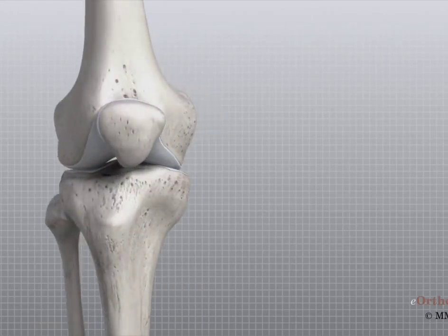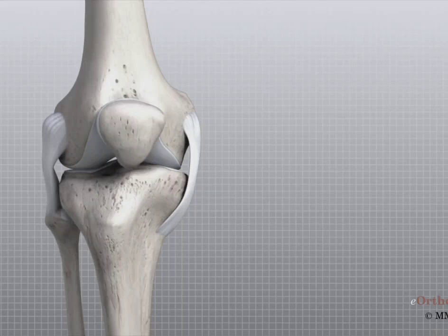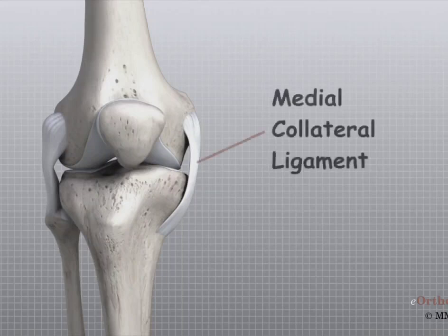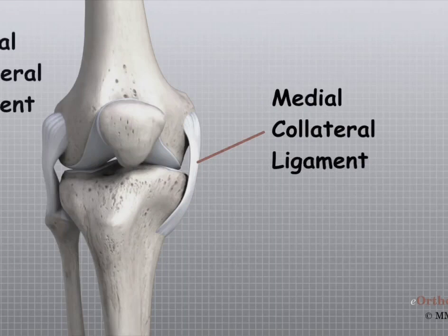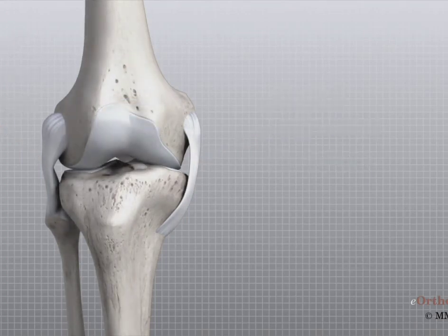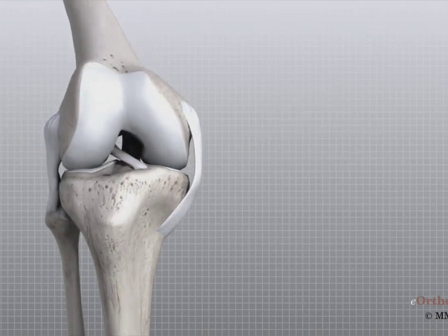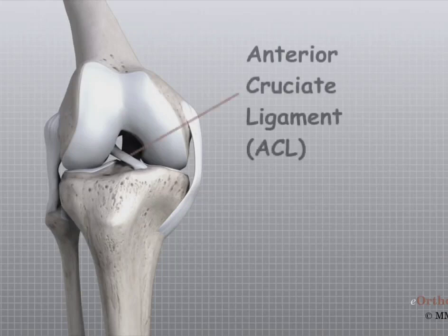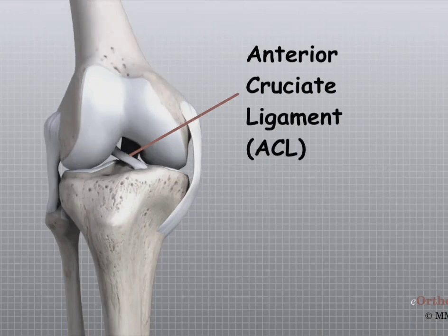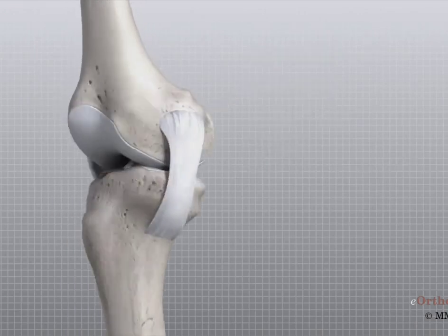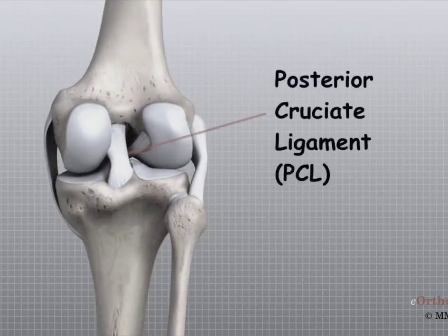Ligaments are tough bands of tissue that connect the ends of bones together. Two important ligaments are found on either side of the knee joint: the medial collateral ligament or MCL and the lateral collateral ligament or LCL. Inside the knee joint, two other important ligaments stretch between the femur and the tibia — the anterior cruciate ligament or ACL in front and the posterior cruciate ligament or PCL in the back.